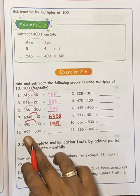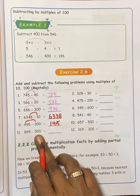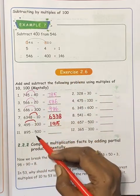Next, 895 minus 500. Now, 1, 2 is 9. Sorry.